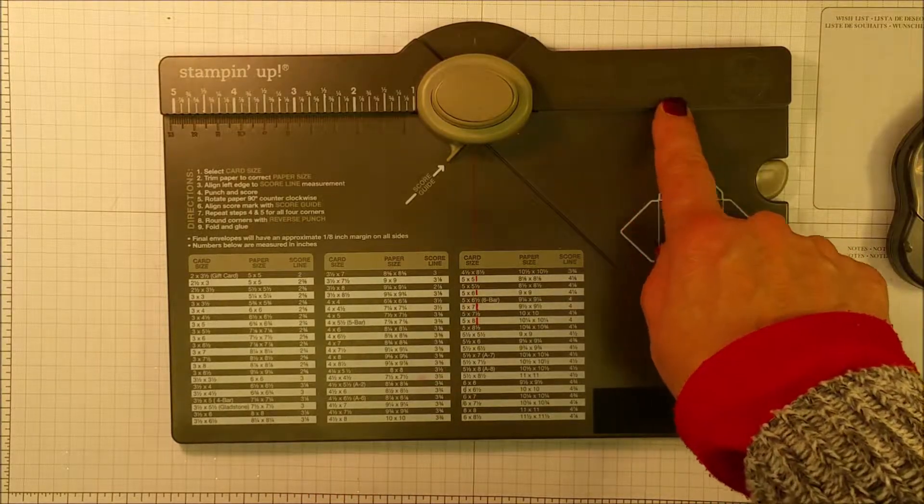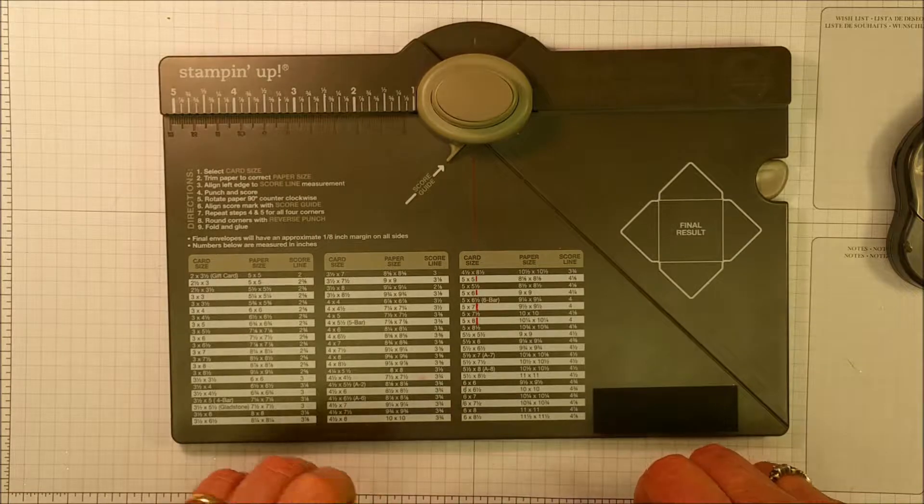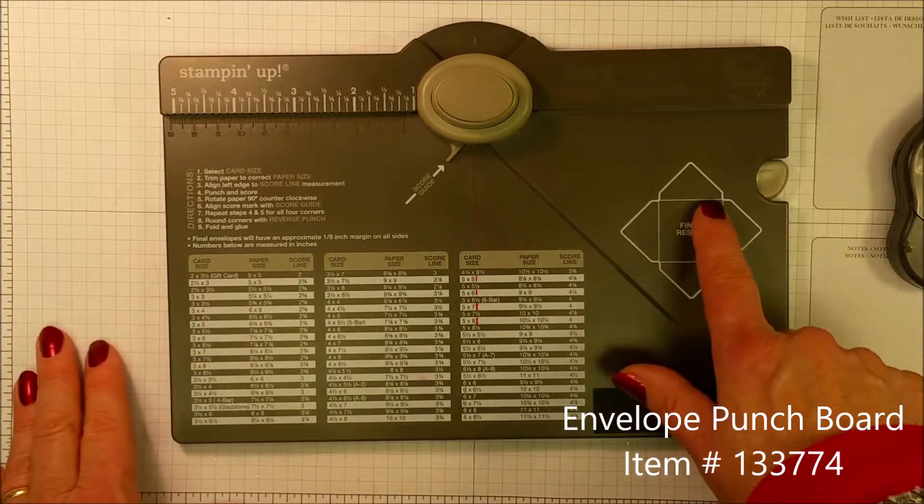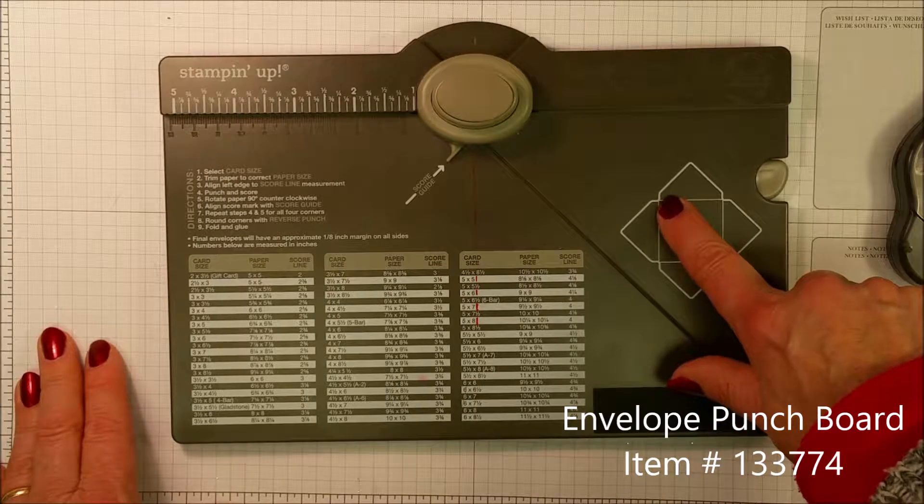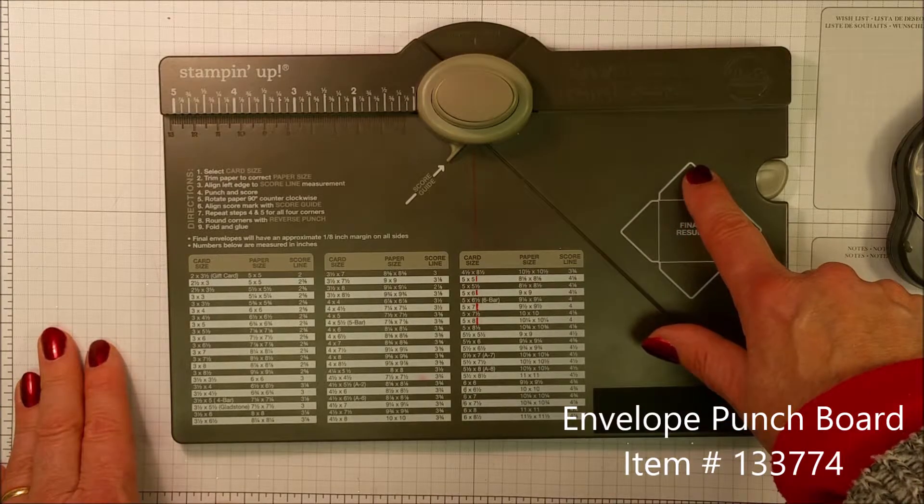This is the envelope punch board sold by Stampin' Up! It's a great tool because it does everything you need. It's going to help you score the lines that you need for folding. It will help you cut the notches, and it will help you to round the corners.